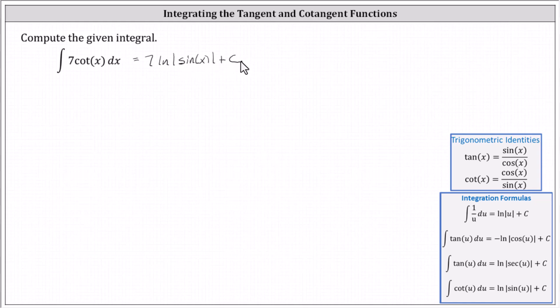Let's find this antiderivative a second way by writing cotangent x as cosine x divided by sine x. The given integral is equivalent to seven times the integral of cosine x divided by sine x dx.